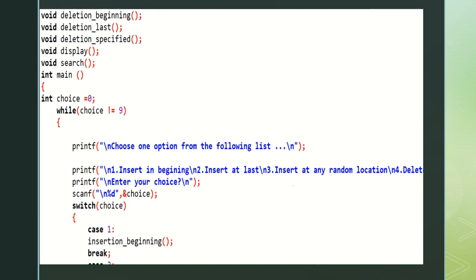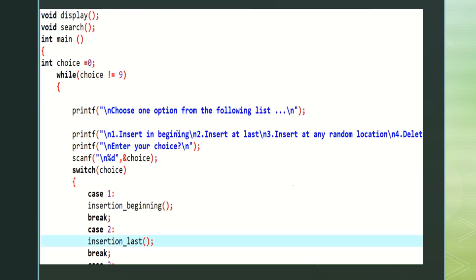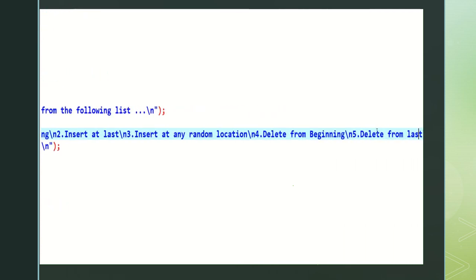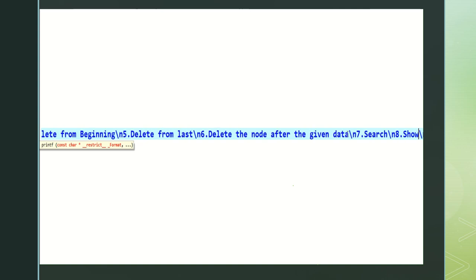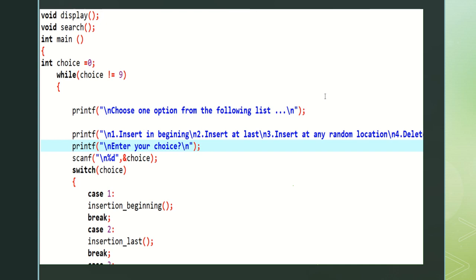Printf: choose one option from the following list. The options are: insert in beginning, insert in last, insert at random, delete from beginning, delete from last, delete the node after the given data, search, show, and exit. Next, printf: enter your choice — the user has to choose a choice.